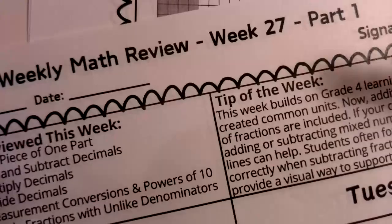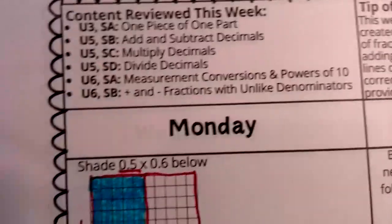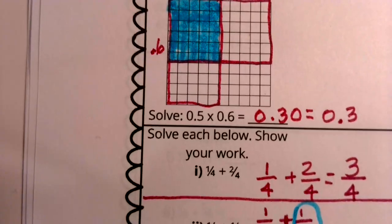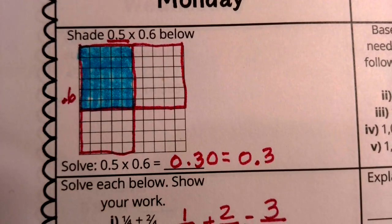Good morning Mathematicians. We are thinking about week 27. It is Monday. We're going to be thinking about all kinds of content this week and we're starting with multiplying decimals.